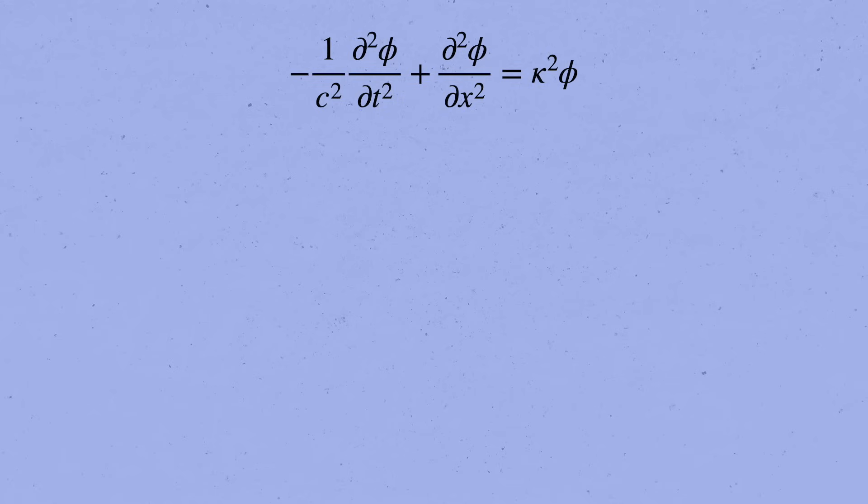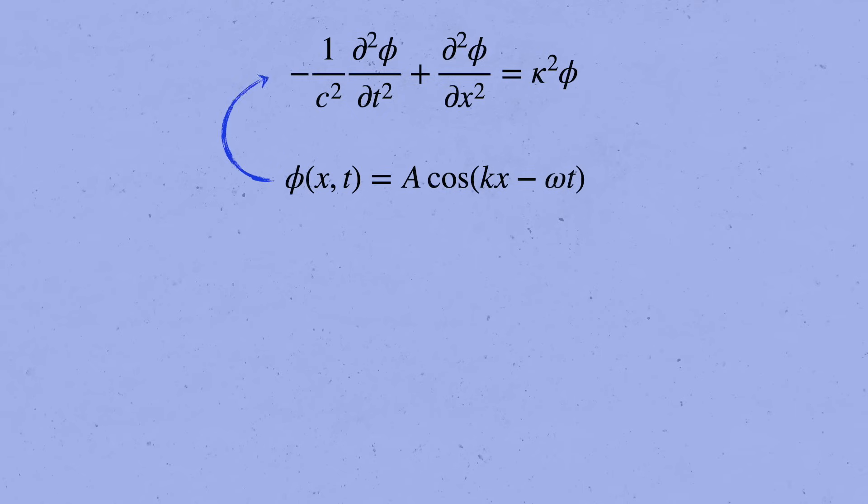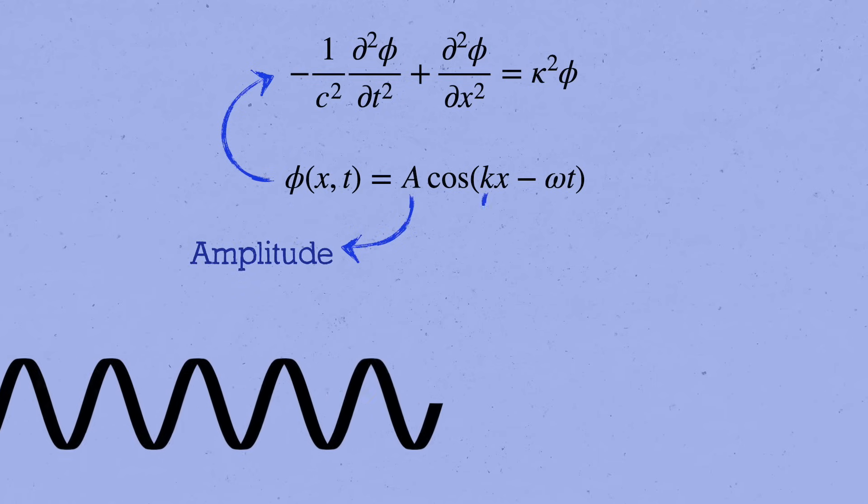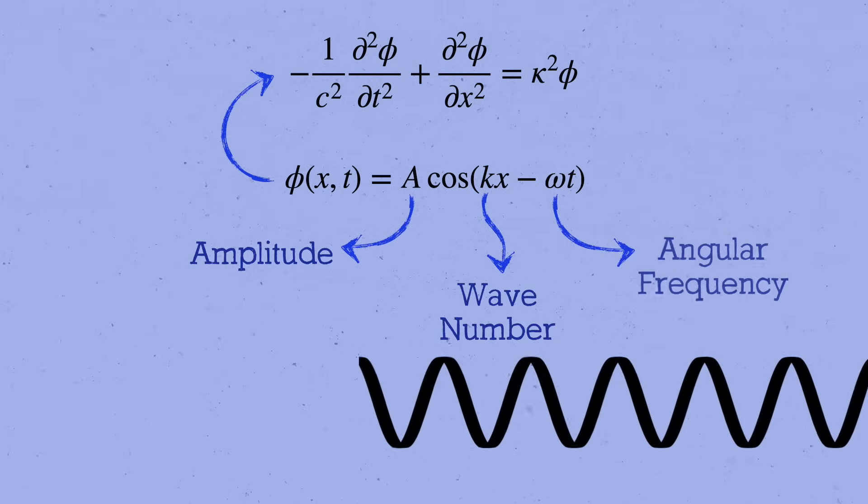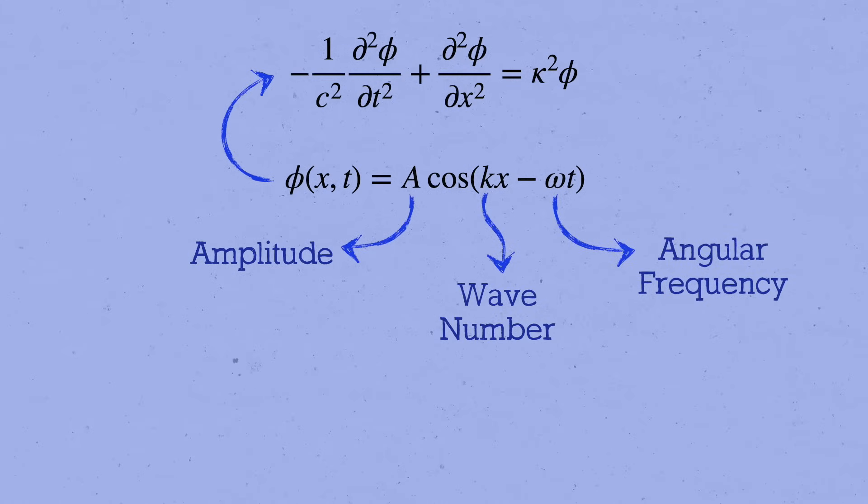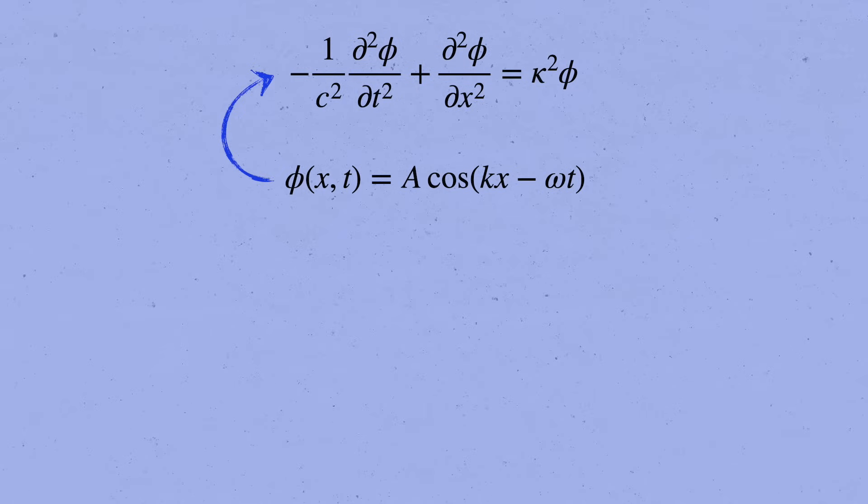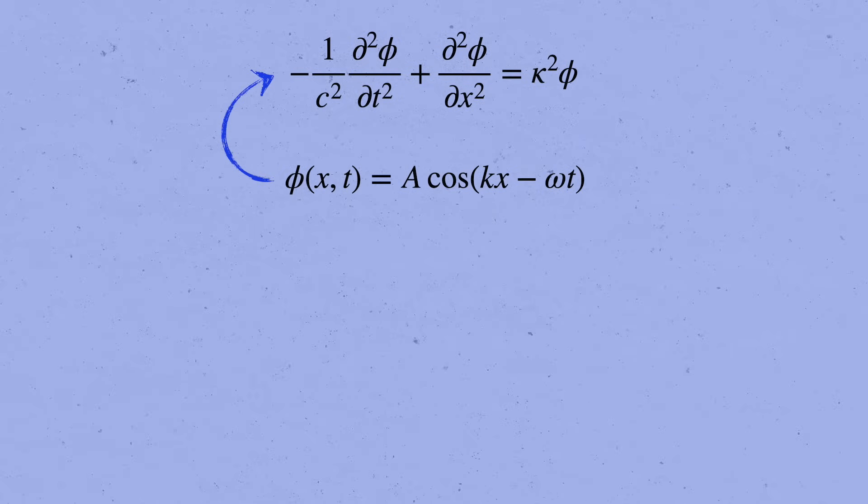Since the Klein-Gordon equation is so similar to the wave equation, let's try solving it by plugging in a simple wave, phi equals a times cosine of kx minus omega t, where a, k, and omega are constants, the amplitude, wave number, and angular frequency of the wave. We want to see if we can choose them so that this guess really does solve the equation.